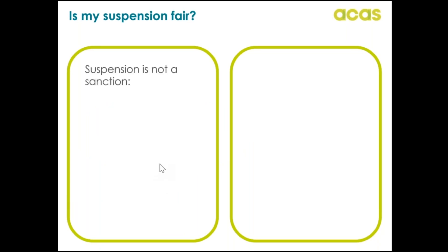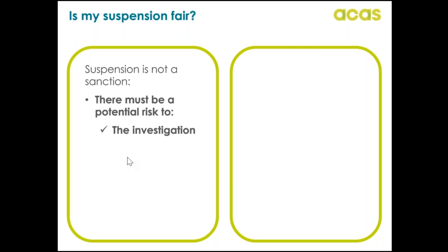First of all, it's important to be aware that suspension is not a disciplinary sanction nor an assumption of guilt. An employee should be paid in full unless their contract states otherwise. The reason for suspension should be explained by the employer and confirmed in writing. A suspension should only be used to protect where there is a potential risk — for example if an employer is concerned that a fair investigation can't be carried out whilst an employee is on site and they might try to influence witnesses. There may be a risk to business assets, for example if the allegation is that someone is stealing, an employer could suspend to minimise the risk of further offences.